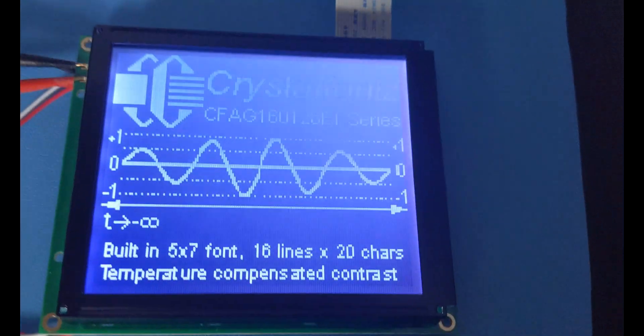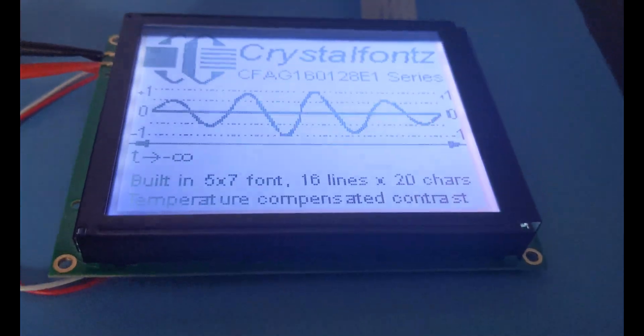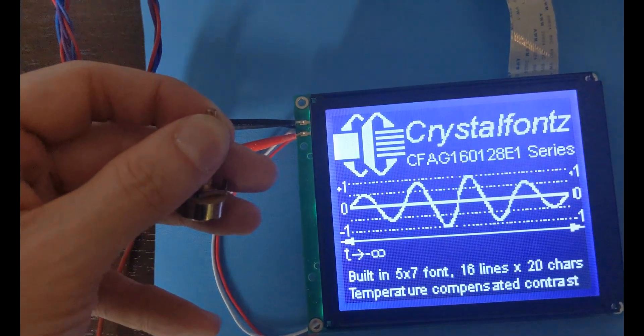This graphic LCD is a revision to a previous model which uses new glass, so its contrast is a little different than the previous version. But as you know, contrast can be adjusted using a potentiometer.